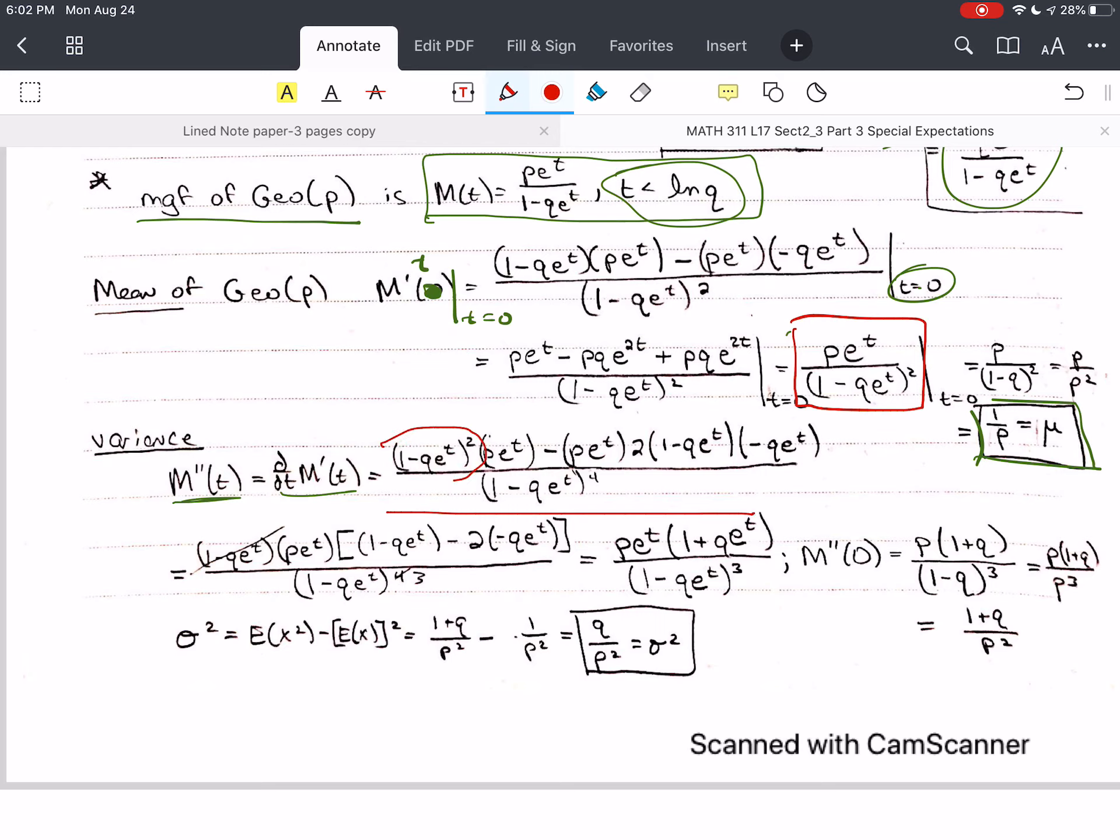And then we factor out. So, I have 1 minus q e to the t squared, 1 minus q e to the t to the 1. I can factor out 1 of those from each across both sides of the subtraction there. And I look, and I have p e to the t, and I have p e to the t, so I can factor that out. And I have to factor exactly. I have to be precise in doing this. When you're done, you've got q, 1 minus q e to the t to the 4th. I have 1 up here, so I cancel that and end up with 3. I end up with a cube. I keep on simplifying, and this is E x squared, the expected value of x squared, not the variance. I still have to subtract the mean squared. And when I do that, I get q over p squared. This is the variance of the geometric distribution.